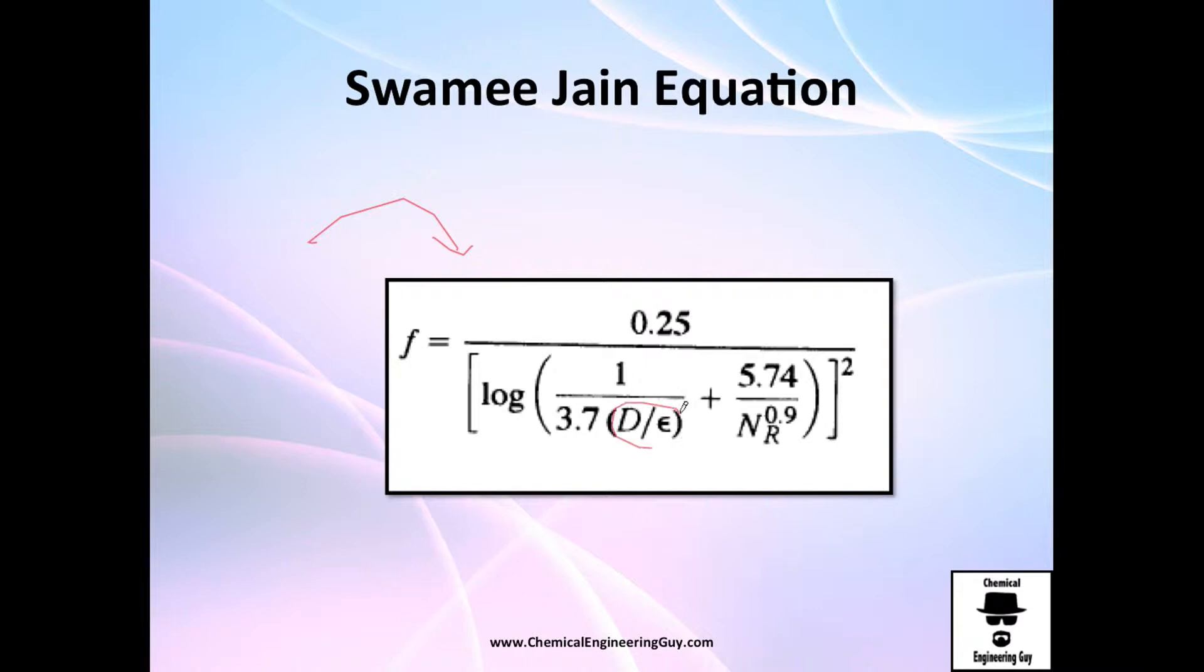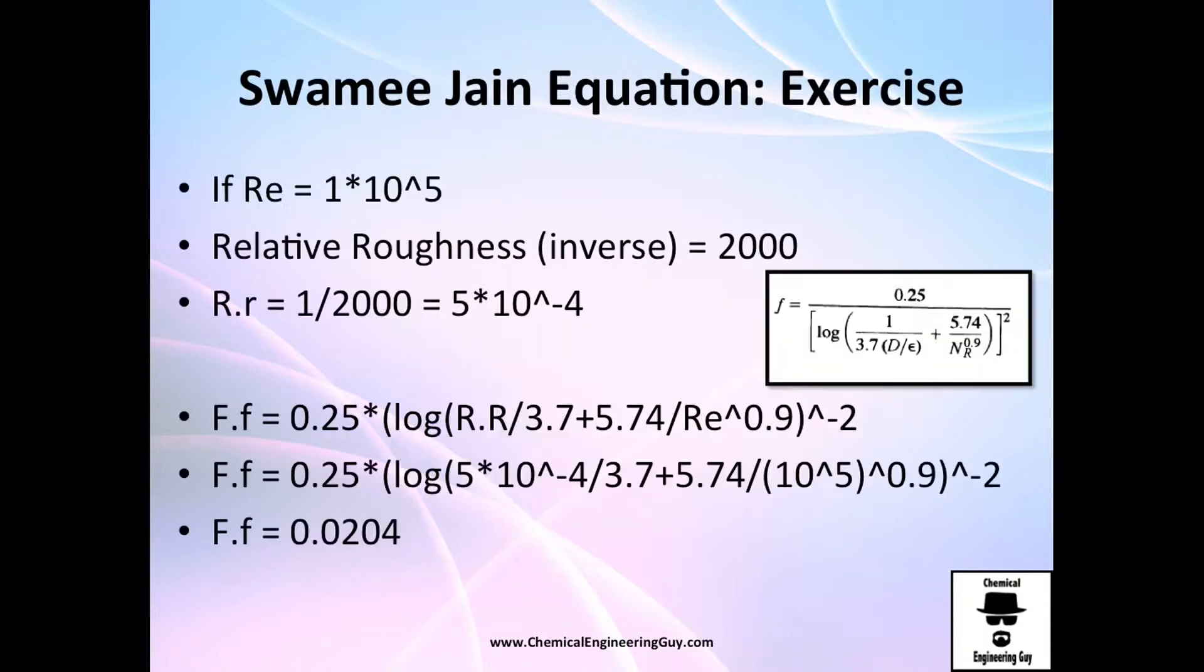You only got this one term of relative roughness and one term of Reynolds number. Of course because it has less terms it is a little bit less precise, but it still works. I mean it's only a matter of maybe two or three percent.